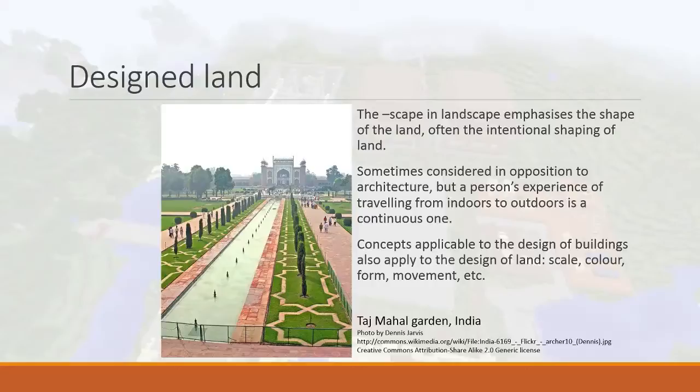Landscape refers to the shape of the land, but also the shaping of the land — changing it into something that you like. The picture here is of the Taj Mahal Garden in India. The Taj Mahal is pretty famous, but the garden is usually overlooked. You typically see pictures of the white mausoleum, but the gardens are also very well designed.